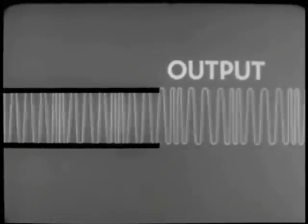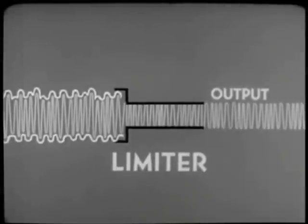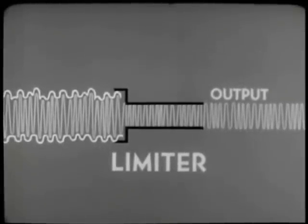The limiter's output is a wave that still carries the intelligence in the form of frequency variation, but it no longer includes the extremes of amplitude that carried any interference picked up during transmission. The next step is to extract the intelligence — to change the frequency variation back into audio frequency voltage variation, which we can then amplify and feed to a speaker. In an FM receiver, this is the function of the demodulator or discriminator. You might say that the discriminator in FM is the rough equivalent of the detector in an AM receiver.